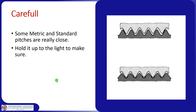Be very careful when putting the gauge down in the threads. Some metric and standard thread pitches are really close, so make sure you pick the right one. A gauge that doesn't match will touch on one side and have a gap, eventually butting up on the other side. A gauge that fits perfectly sits right down in the middle — that's a perfect match — and you read the stamped number on the gauge as your thread pitch.